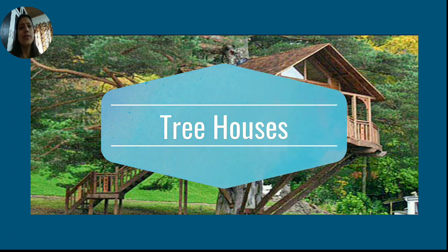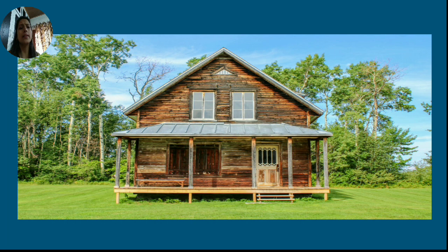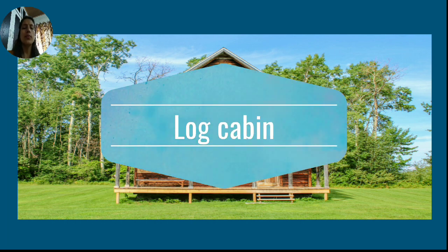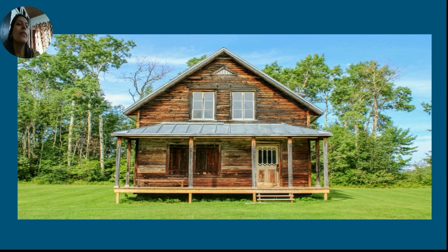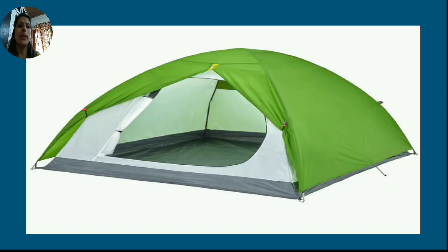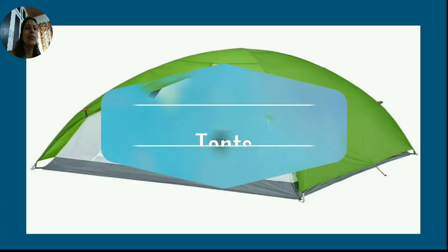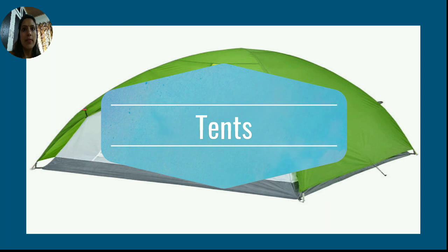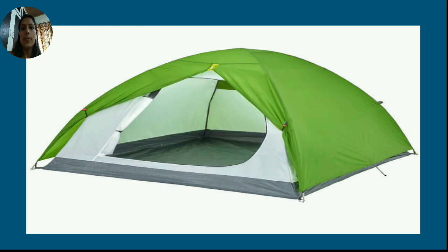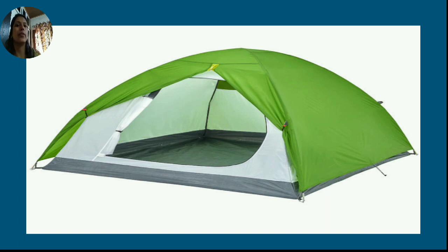These are not very strong houses. Then the tree house — the tree house is made up of wood. This is a log cabin, which is also made up of wooden logs. It is also a type of temporary house. A tent is usually made up of canvas or nylon, and this is also a type of temporary house.